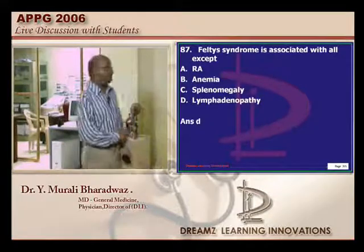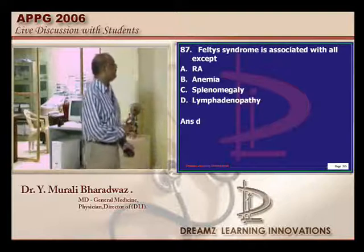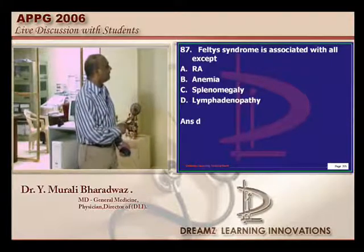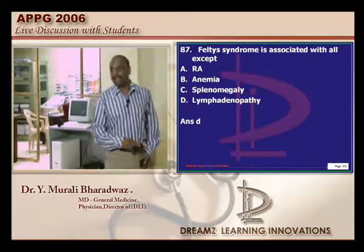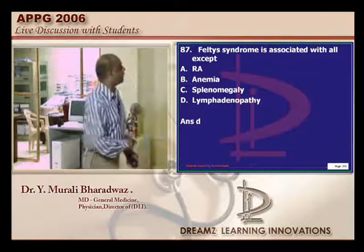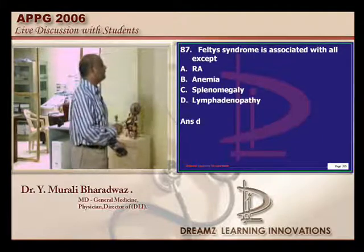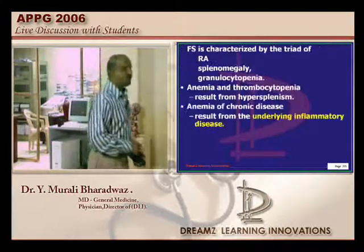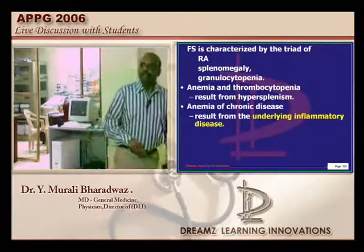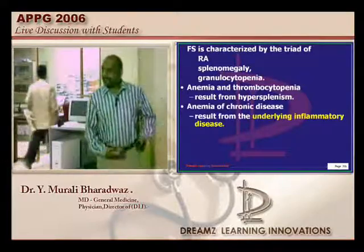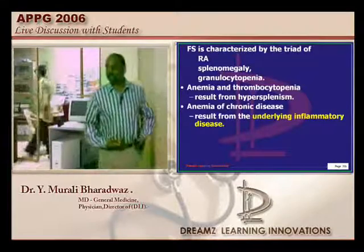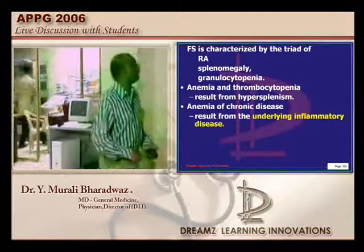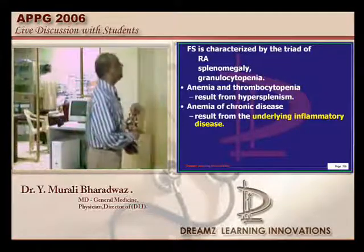Rheumatoid arthritis plus anemia plus splenomegaly — not lymphadenopathy — is the combination called Felty's syndrome. Why will anemia occur? Because of hypersplenism, number one; and number two, anemia of chronic disease.